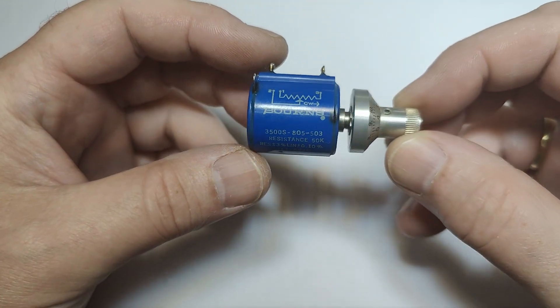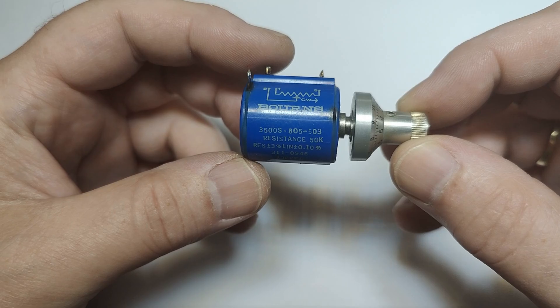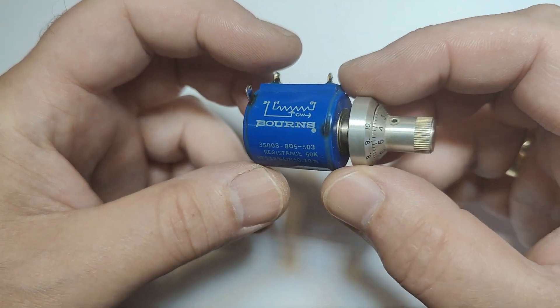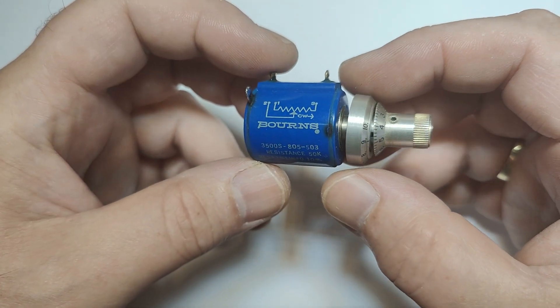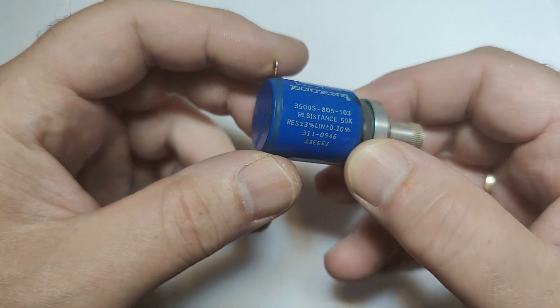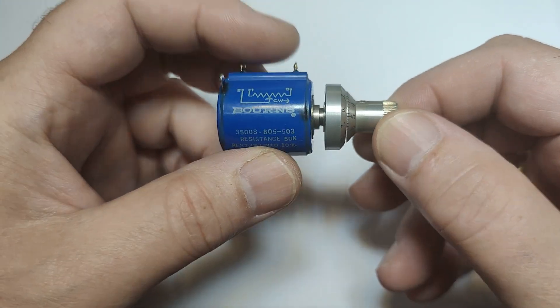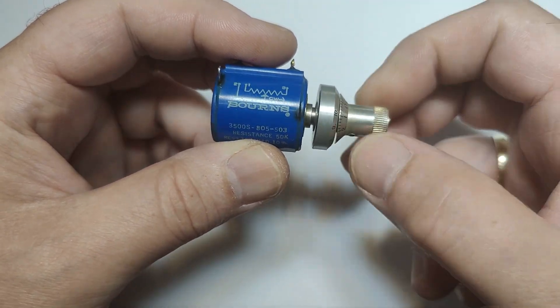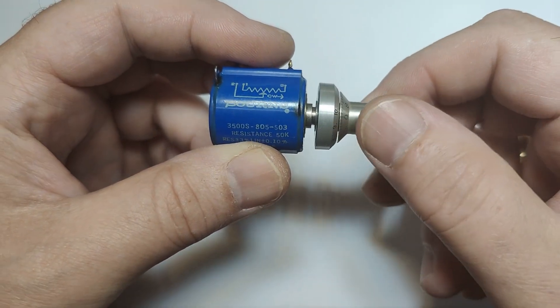Have you ever wondered what is inside those multi-turn potentiometers? Well, we can look up there - they're wire wound and there are 10 turns. You can turn the shaft 10 times.